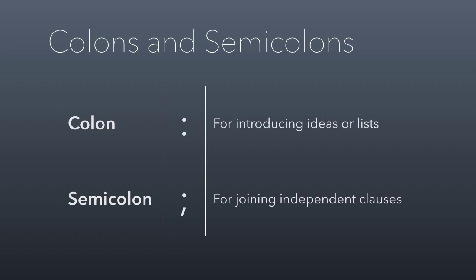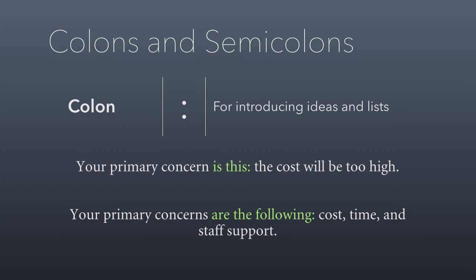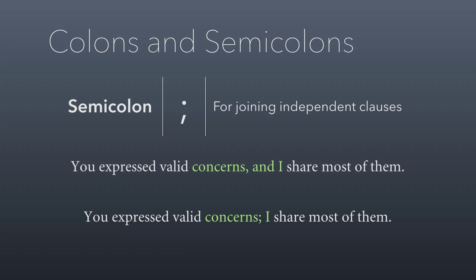Let's talk about colons and semicolons. A colon is used for introducing ideas or lists. For example: 'Your primary concern is this: the cost will be too high,' or 'Your primary concerns are the following: cost, time, and staff support.' A semicolon is for joining independent clauses — and in this case you don't need a FANBOYS word. You can delete the comma and conjunction, replace with a semicolon, and the sentence works. Semicolons are great for joining concepts and adding variety to your writing. I think they're a nice, sophisticated tool that people don't use often enough.